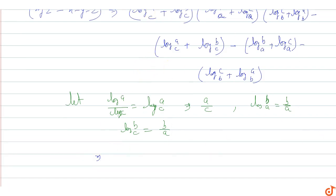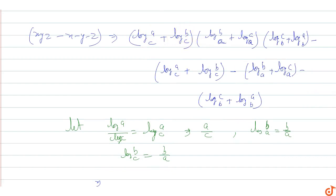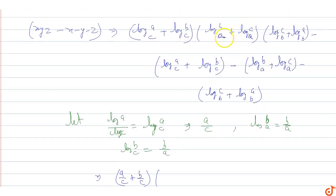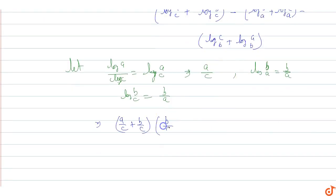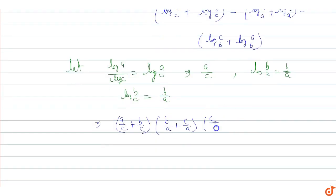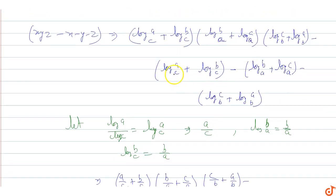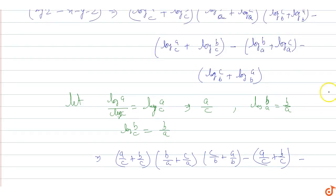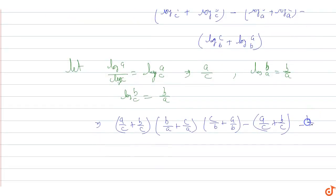This equals: (a/c + b/c) into (b/a + c/a) into (c/b + a/b), minus (a/c + b/c), minus (b/a + c/a), minus (c/b + a/b). Here log values are substituted as their respective ratio forms for computation.